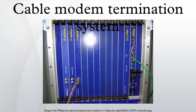A CMTS may also act as a bridge or router. A customer's cable modem cannot communicate directly with other modems on the line. In general, cable modem traffic is routed to other cable modems or to the internet through a series of CMTSs and traditional routers. However, a route could conceivably pass through a single CMTS.